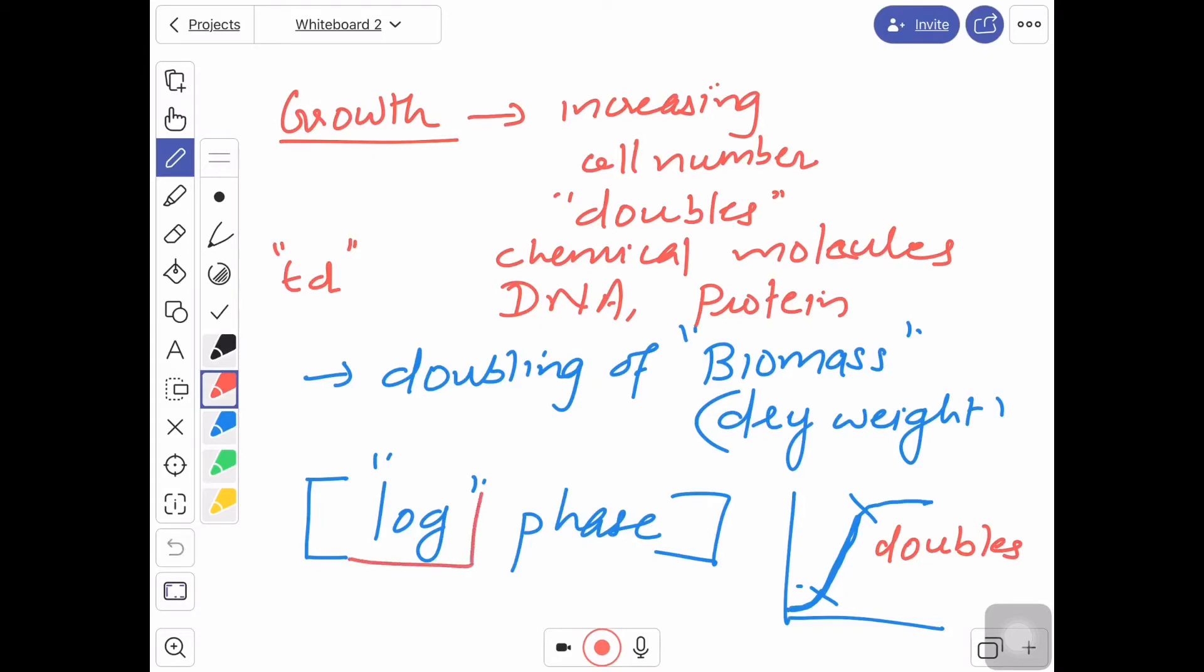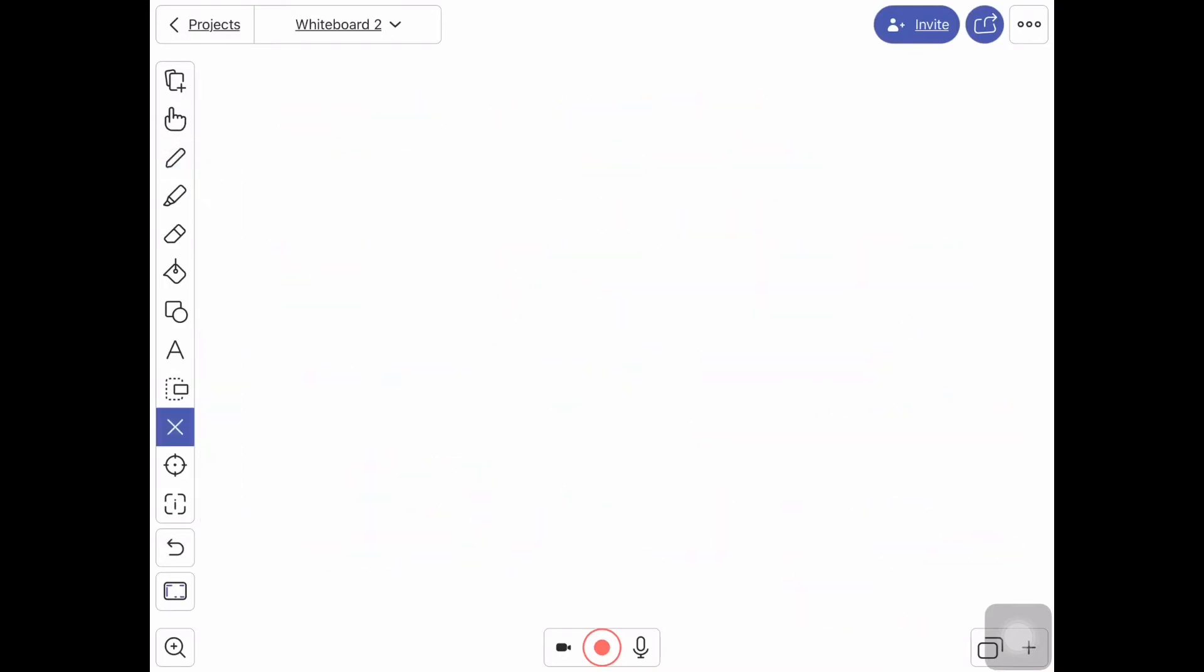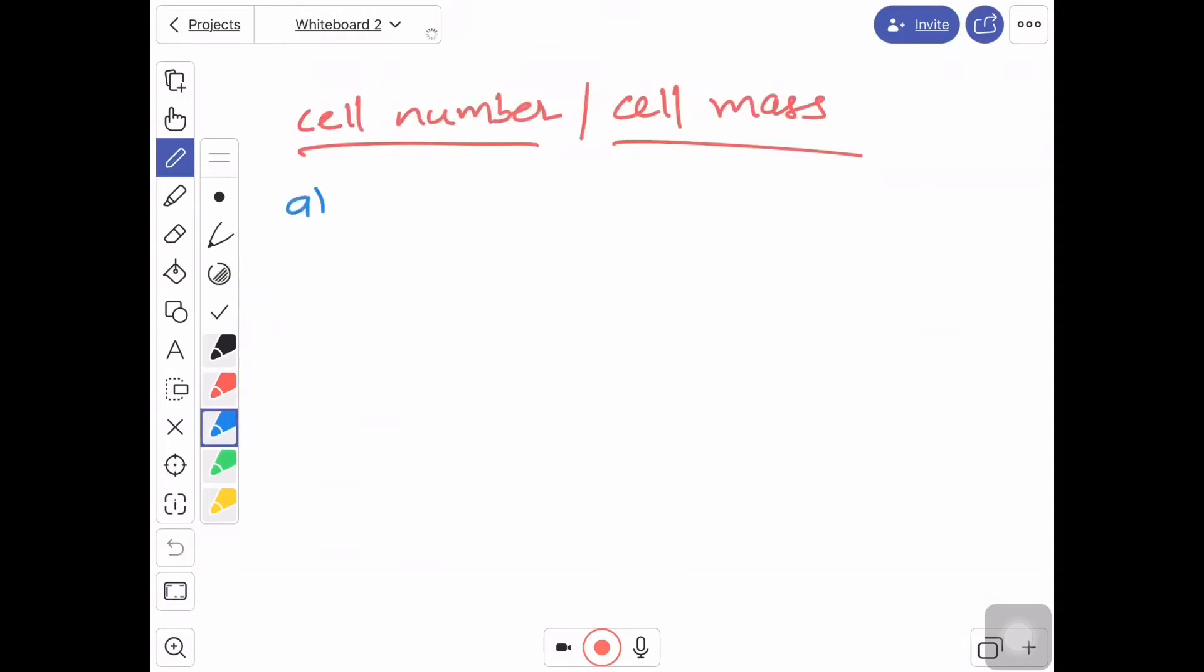Generally, we use log phase and we calculate the doubling time. One of the easiest methods to assess measurement of growth is by measurement of cell mass or number. First method is by measuring dry weight. Dry weight, as I already told you, is biomass.